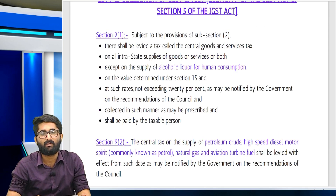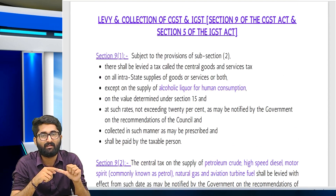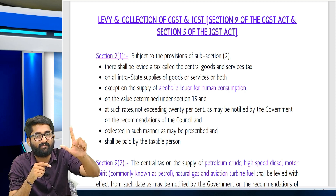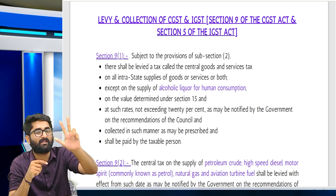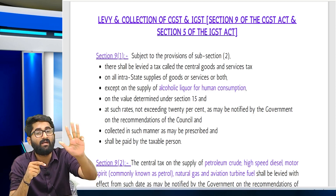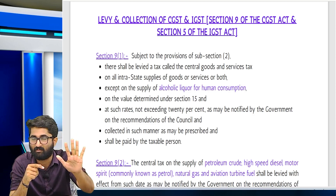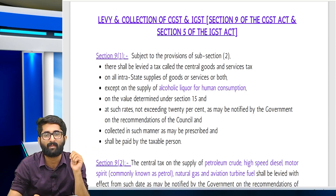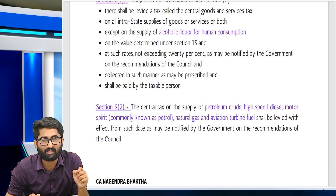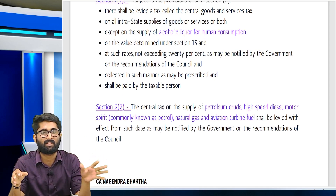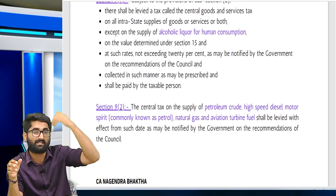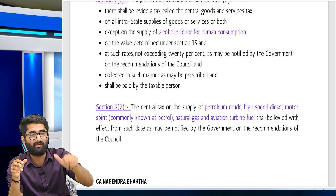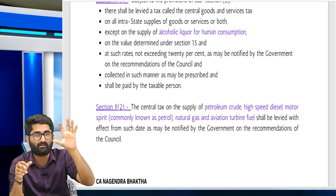Section 9(1): There shall be levied a tax called CGST on all intra-state supply of goods or services, except alcoholic liquor for human consumption, on the value determined under section 15, at a rate not exceeding 20%, collected in such manner as may be prescribed, and shall be paid by such taxable person. Section 9(2) says petroleum crude, motor spirit, high speed diesel, aviation turbine fuel and natural gas — on these five items there is currently no GST.